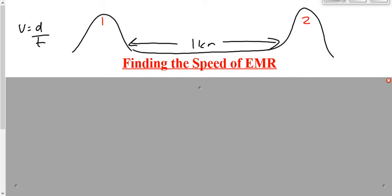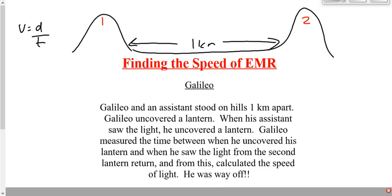What's the problem with this experiment? Why does this experiment give us a completely irrelevant value for the speed of light? Even if it does happen to be close, it would be purely coincidental. There's no significance to the value that he calculates whatsoever. The answer is reaction time — the reaction time is huge here.